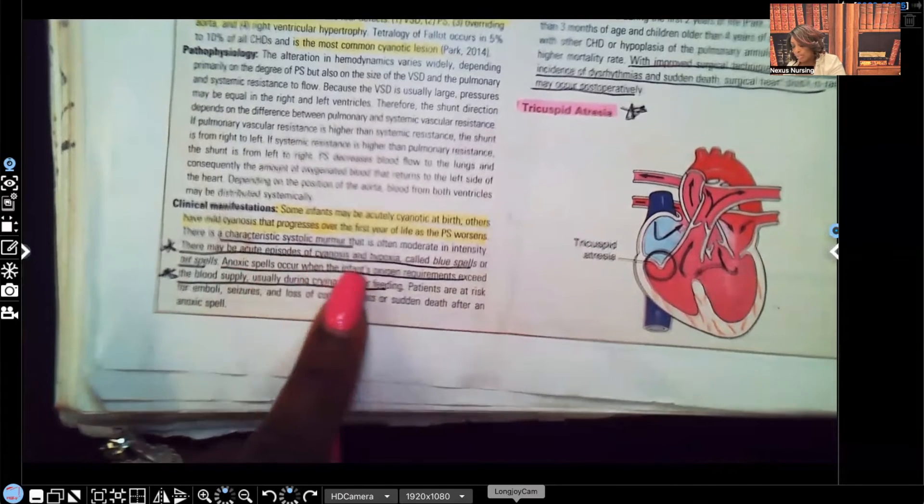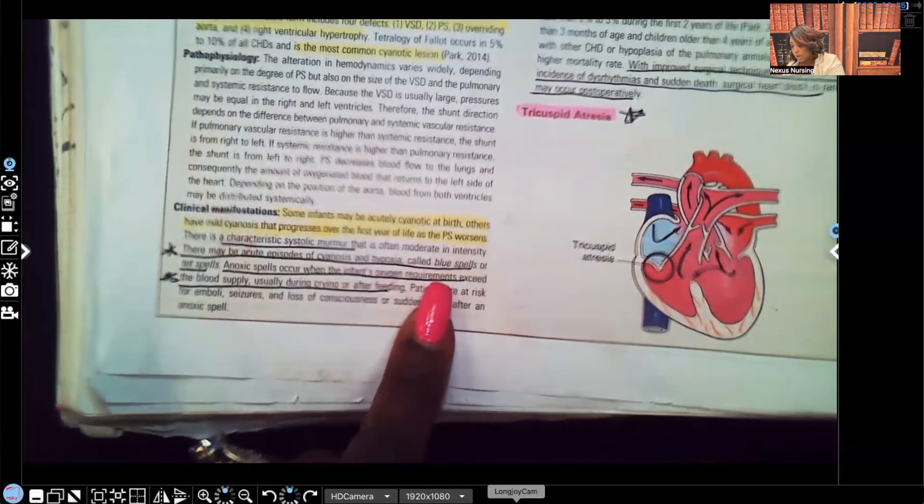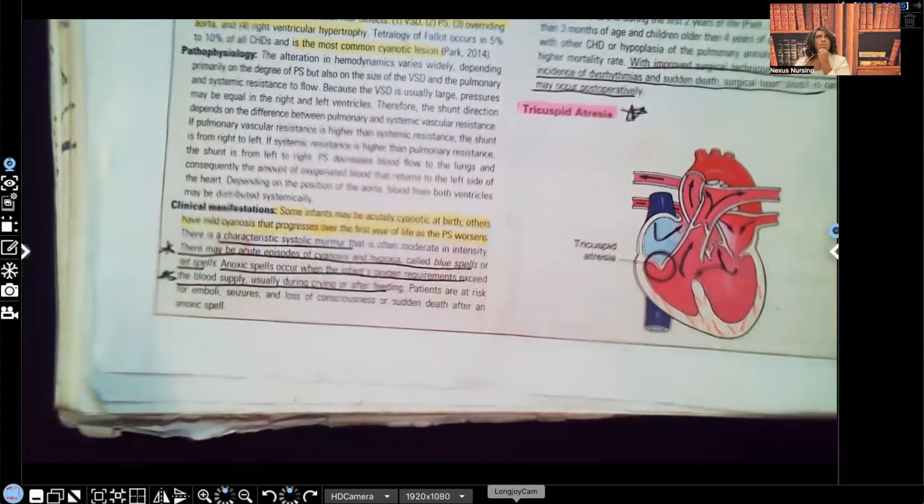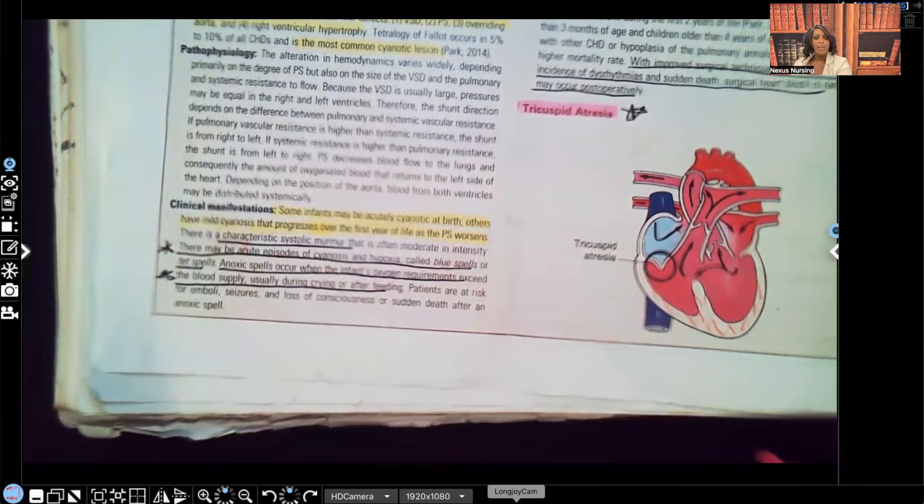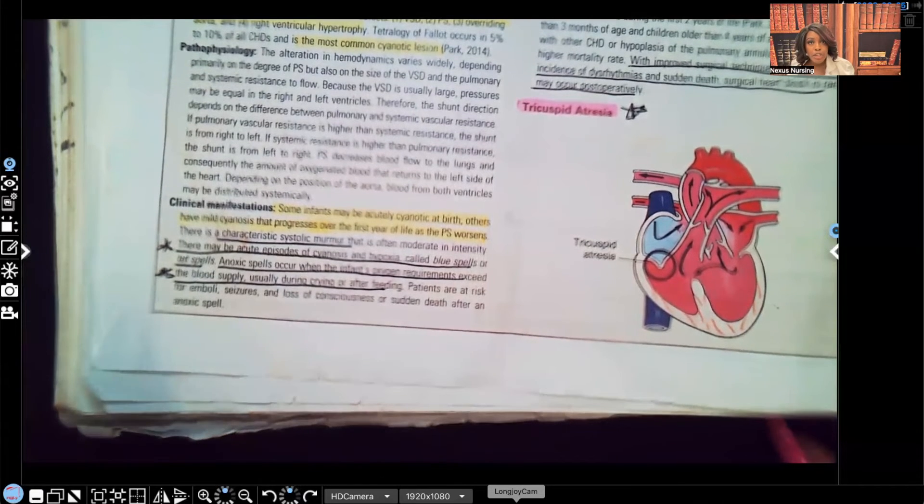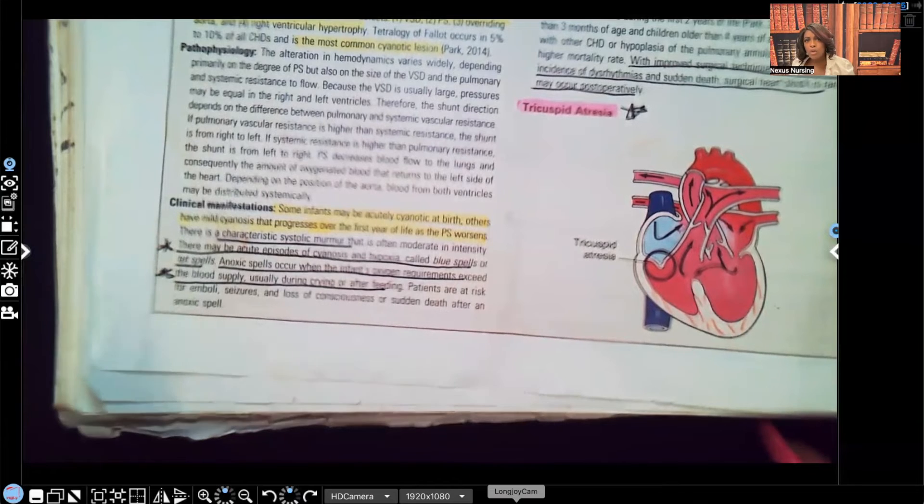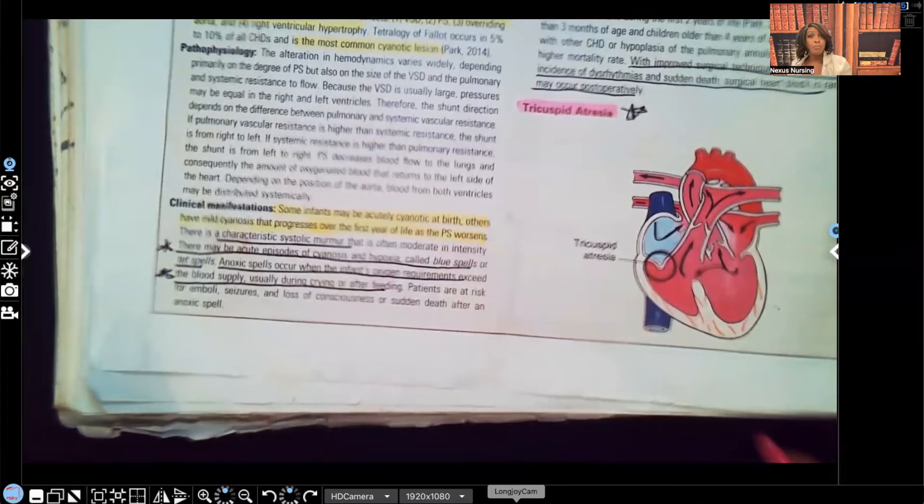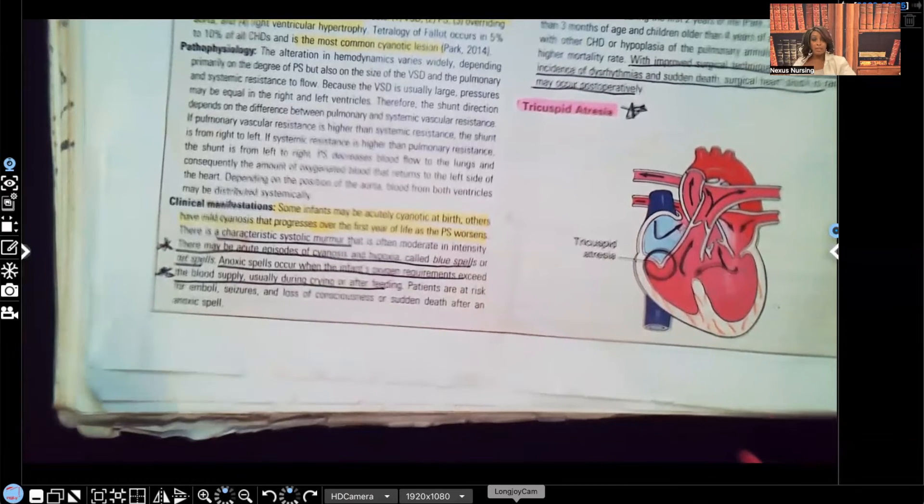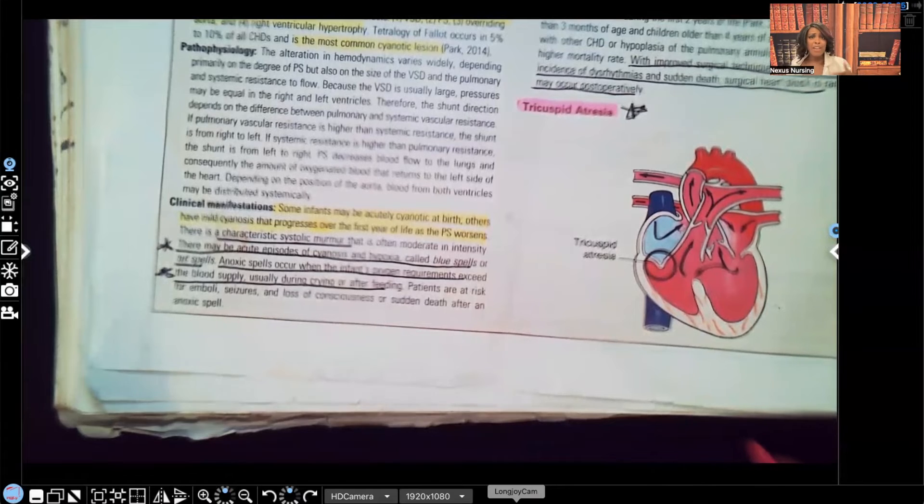Anoxic spells occur when the infant's oxygen requirements exceed the blood supply. So when would their oxygen requirement surpass the blood supply that they have? Anytime they do anything that requires more oxygen, such as crying. Crying takes energy. Energy requires oxygen that this patient doesn't have.